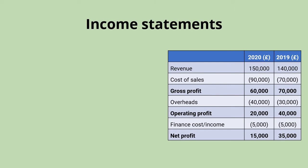Here we have an example of an income statement, sometimes called a profit and loss account, because it shows a business's profit or loss over a period of time — usually over a year. Working from top to bottom, it starts with revenue, which is price multiplied by quantity sold — all income received from selling your product. For example, if this business manufactures and sells shoes, revenue would be the number of shoes sold multiplied by the price.